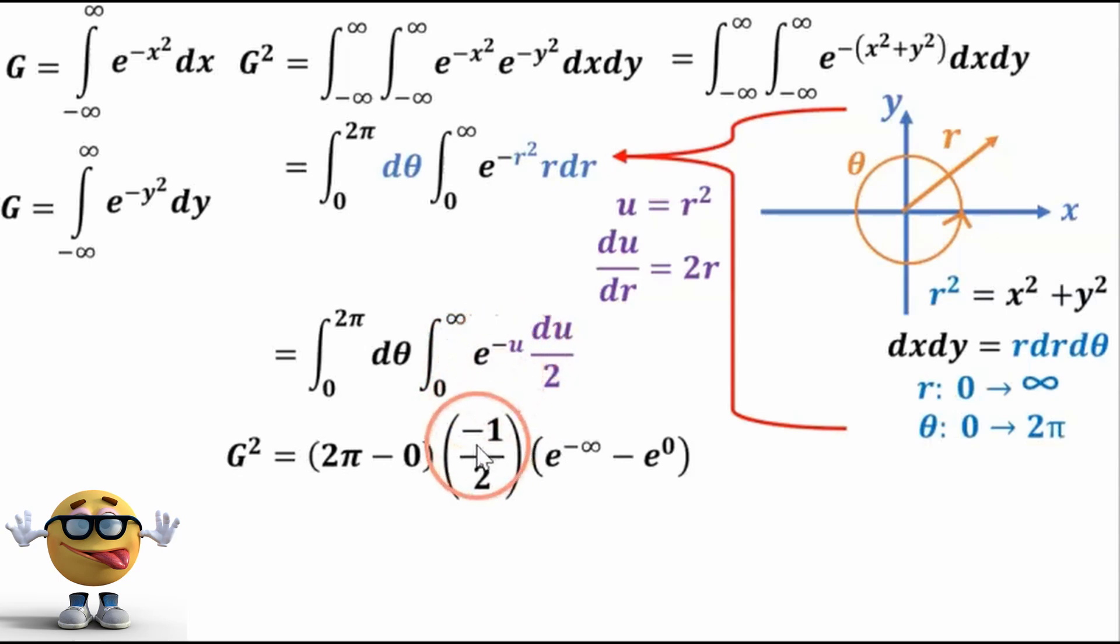This is our friend, except there's a negative sign in front, because when we take the derivative, then we've got this negative to come out. And then we'll evaluate that from infinity to 0.